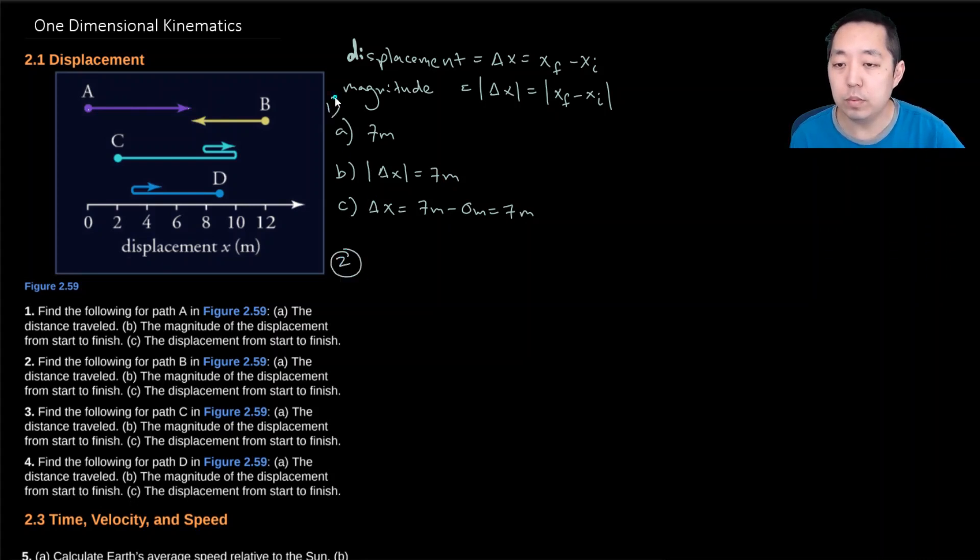So for number 2, we're doing all the same thing for A, B, C, and D in this case. So B, for point B here, let's look at the displacement first. That's usually the easiest one to calculate. The displacement is the final position, which is 7 in this case, 7 meters, minus its initial position where it started, 12 meters. And that's negative 5 meters. And the magnitude of this displacement is 5 meters, because the absolute value of negative 5 is positive 5. And the distance traveled, again, is the same, because all it did was just go in one direction and stop. And so that's 5 meters.